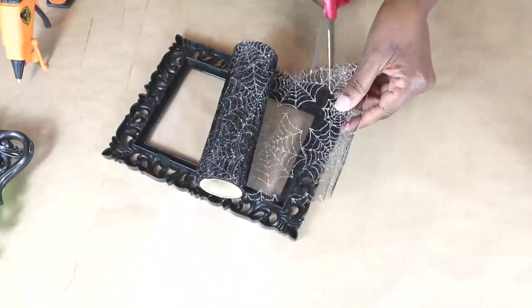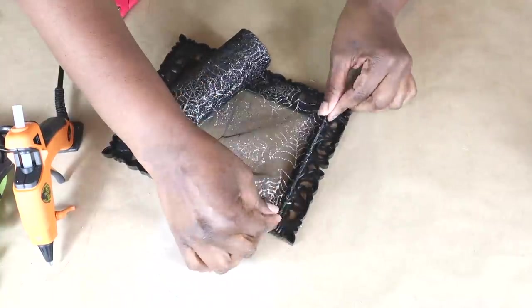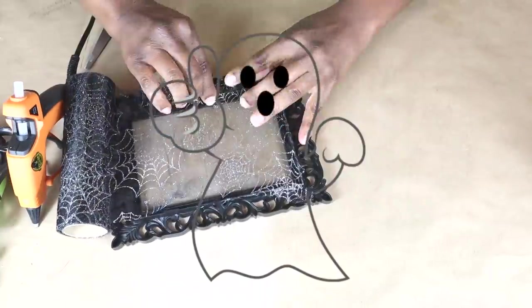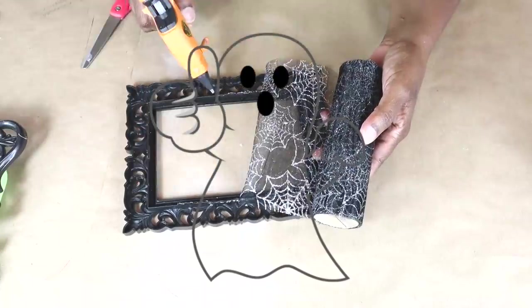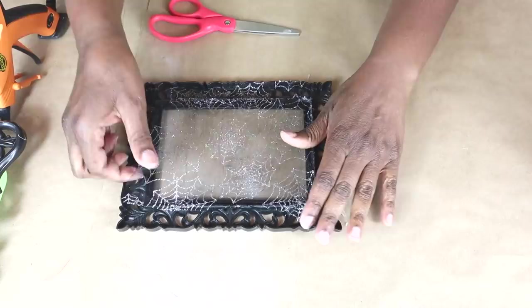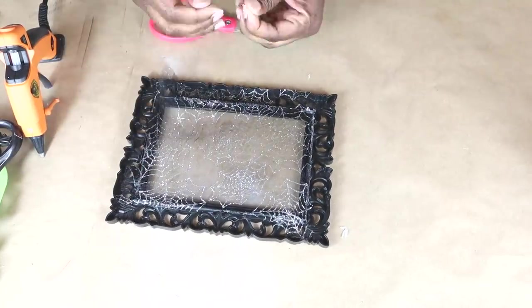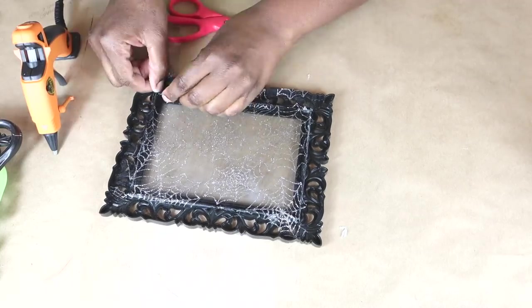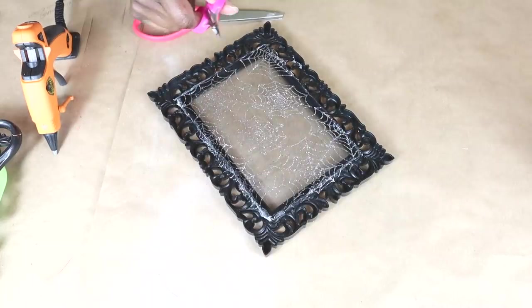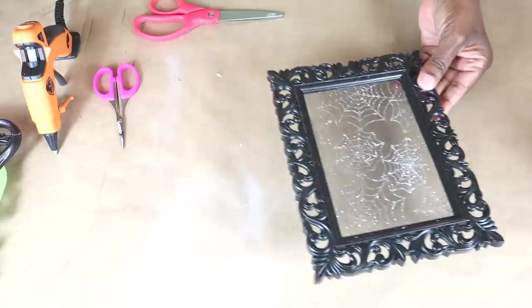And I'm just going to repeat that for the second frame. If you like the video so far, please go ahead and give it a thumbs up. Again, don't forget to pull the mesh taut as you're gluing it down. Cut away the excess so it doesn't show from the front. And this is how they look so far.